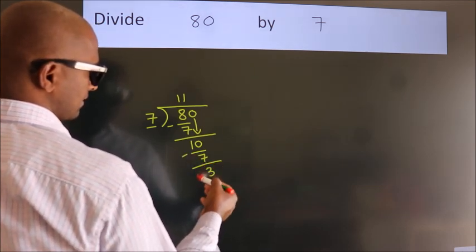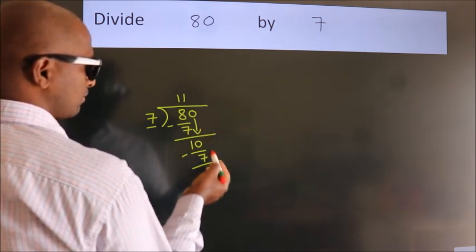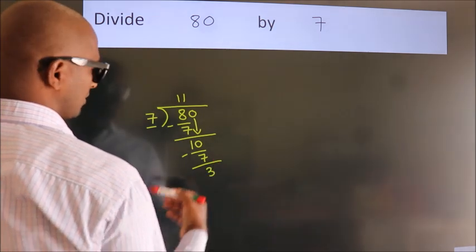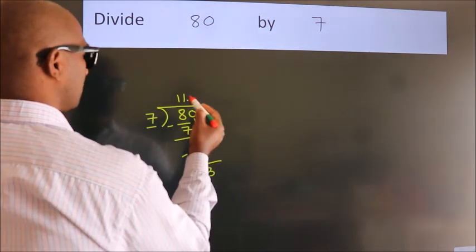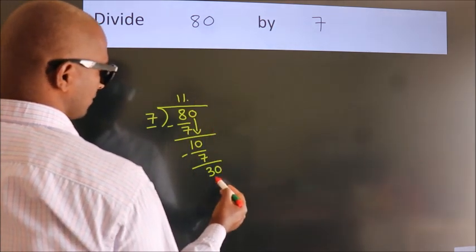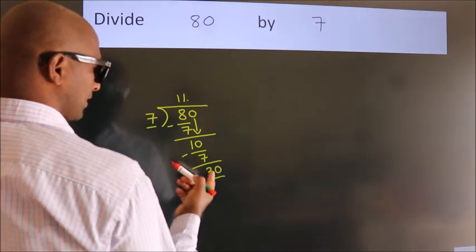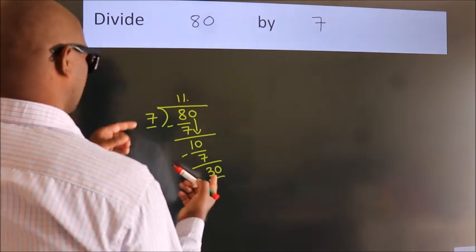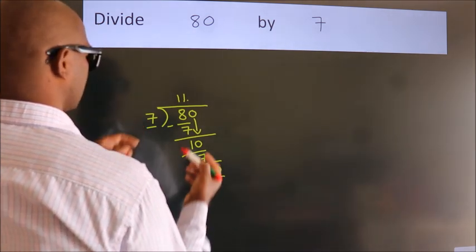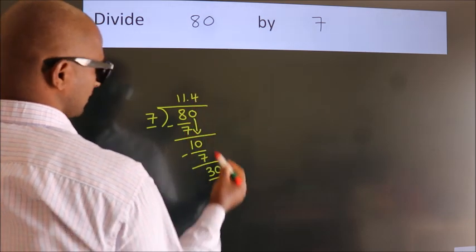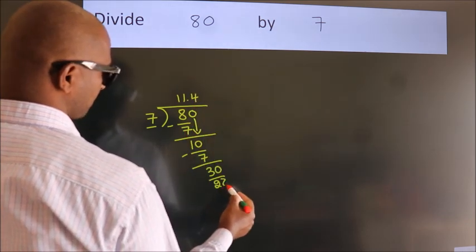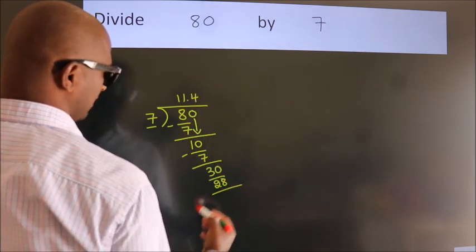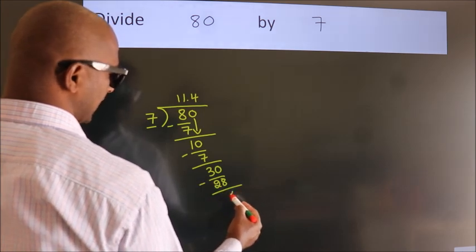After this, no more numbers to bring down. So what we do is we put a dot, take 0, so 30. A number close to 30 in the 7 table is 7 times 4, which is 28. Now we subtract, we get 2.